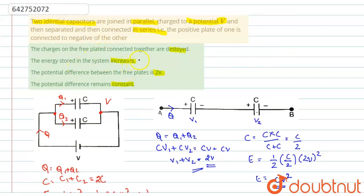This is a false statement. The charges on the free plates connected together are destroyed—no, here the charge is conserved, so first statement is also wrong. The potential difference remains constant—here the potential difference was V, but here we have the potential difference as 2V, hence this is also false statement. The potential difference between the free plates is 2V as we had calculated here, so this is the correct answer.